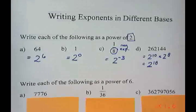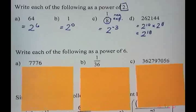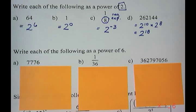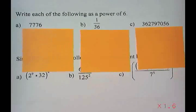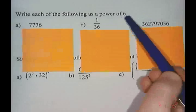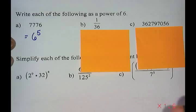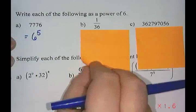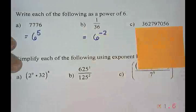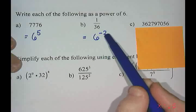I'd like you to take a minute, pause the video, and try the next three questions on your own. Hopefully you paused and tried the questions. 7776 as a power of six is six to the power of five. One over 36 is a fraction, so it should have a negative exponent, giving six to the negative two, because six squared is 36.